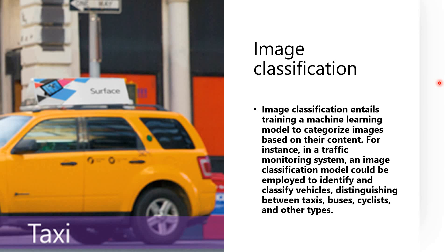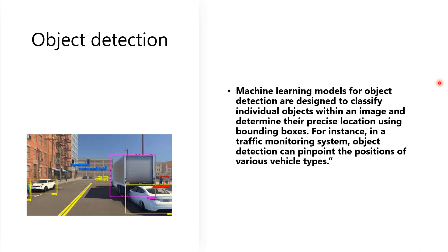In a traffic monitoring system, an image classification model could be used to identify and to classify vehicles, distinguishing clearly between taxis, buses, cyclists, or any other type of vehicles. You can see a simple instance in front of you.